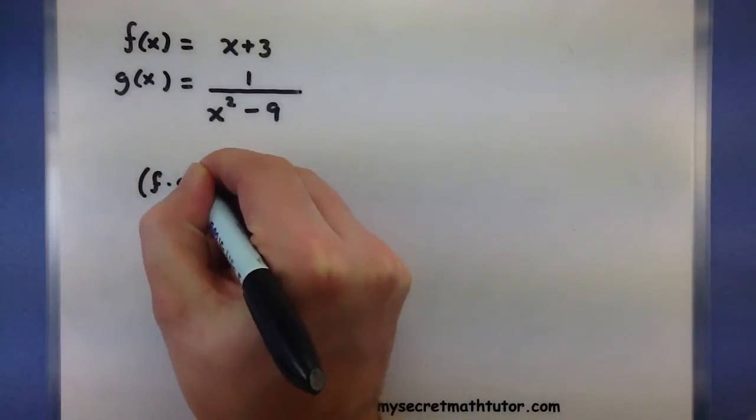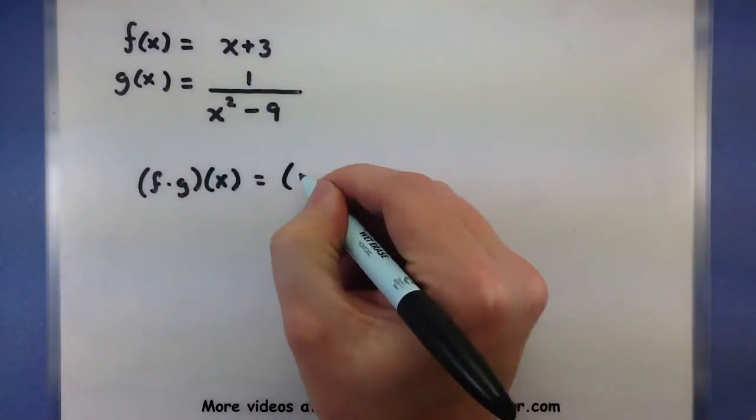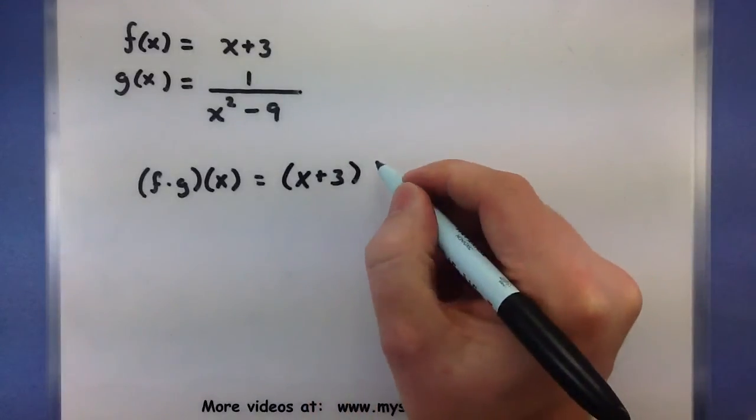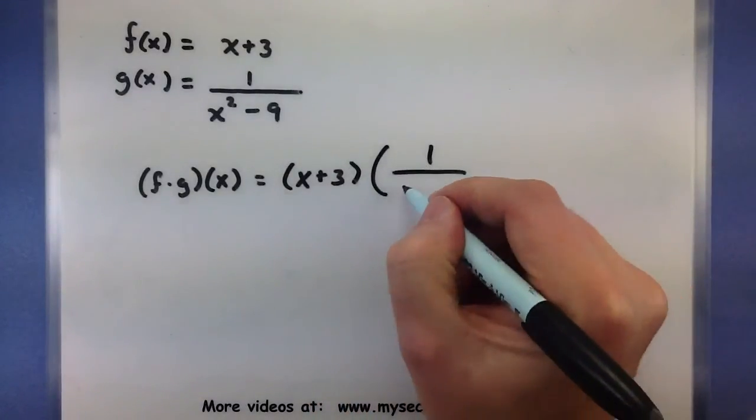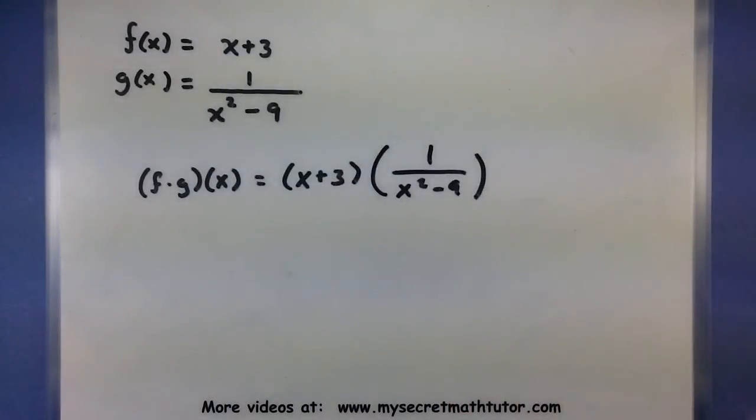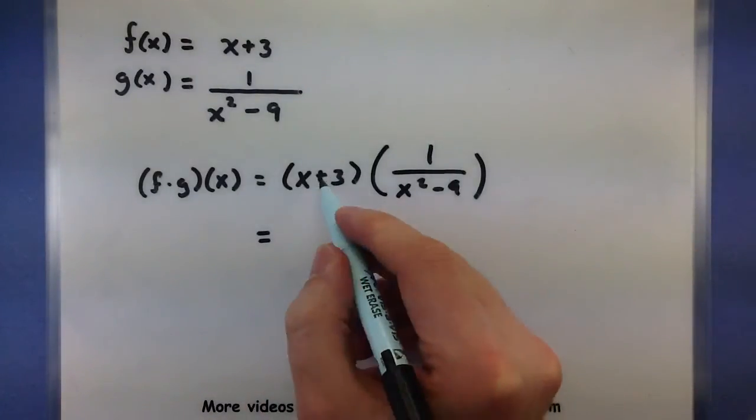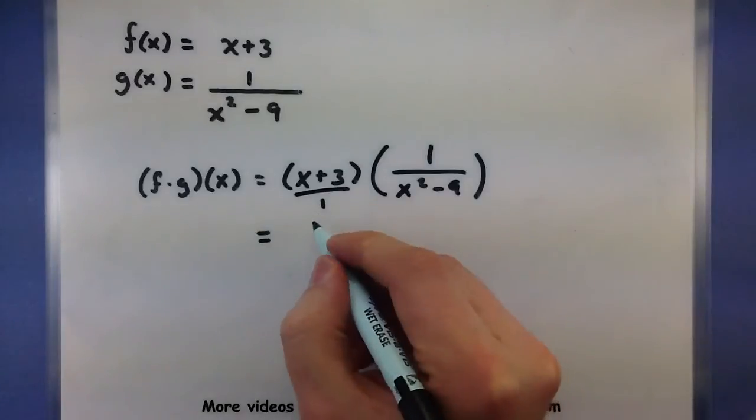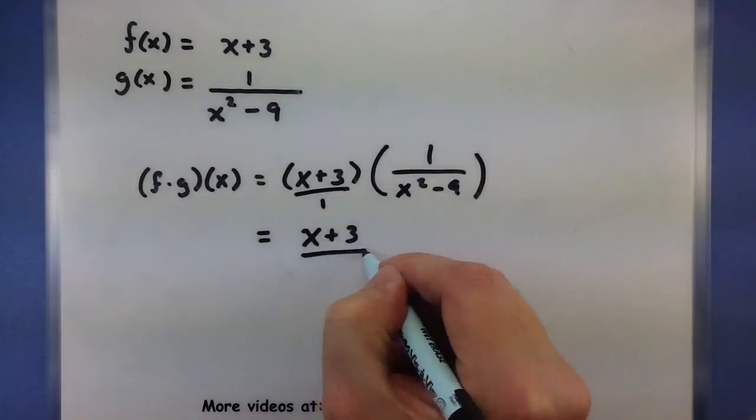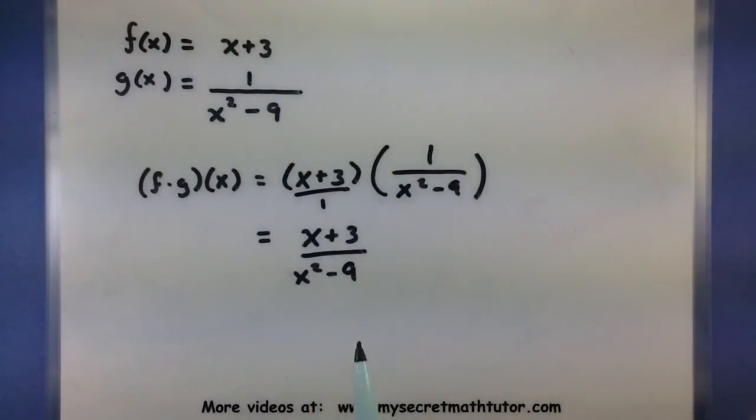We want to do the same thing. Take one function and multiply it by the second one. Now this one is a little bit different in that the second one only has one term in it. So I'm just going to combine the two together by imagining this over 1. And so I have an x plus 3 all over an x squared minus 9.